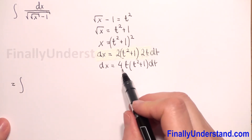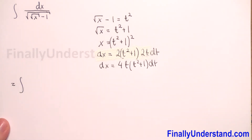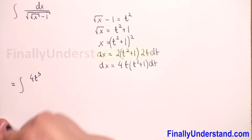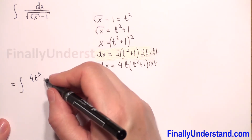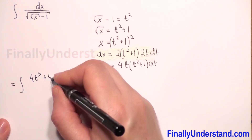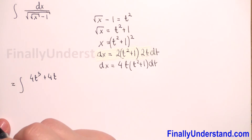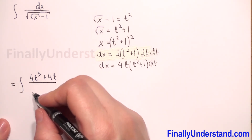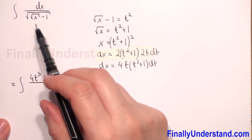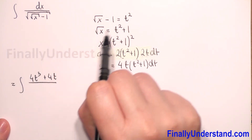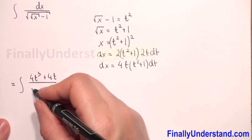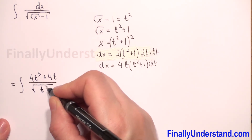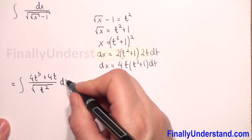We can do the multiplication: 4t times t squared is 4t cubed, and 4t times 1 is 4t, and in the denominator we have square root of x minus 1, which is t squared. So we have square root of t squared dt.